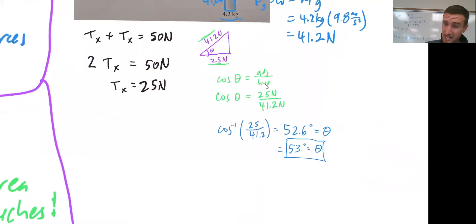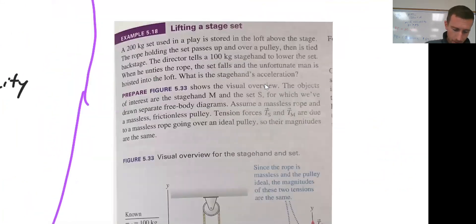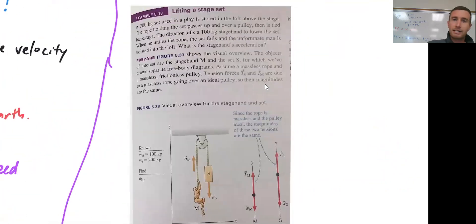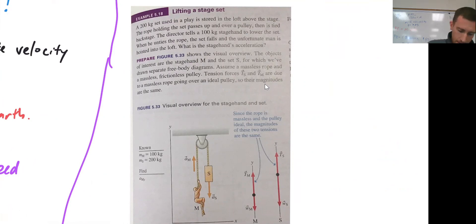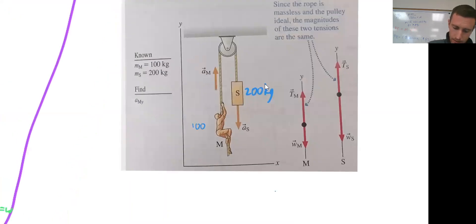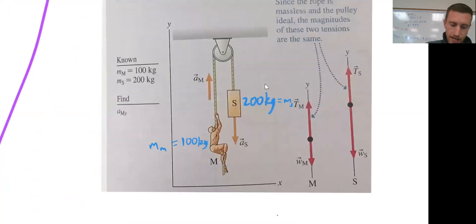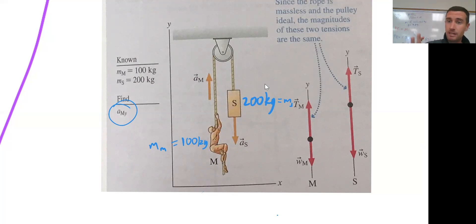So that one kind of makes sense. Let's do our last sample question: lifting a stage set. This one's a little bit tricky. We've got a 200 kilogram set that I'm trying to bring down from a loft above the stage. The person tasked with that is a 100 kilogram man — a stage hand. So he's 100 kilograms — the mass of the man equals the mass of the set. I'm trying to find the acceleration of the man in the vertical direction, since he's on a pulley going up and down, as is the set.